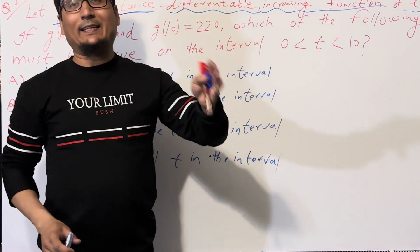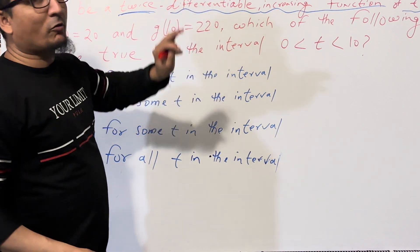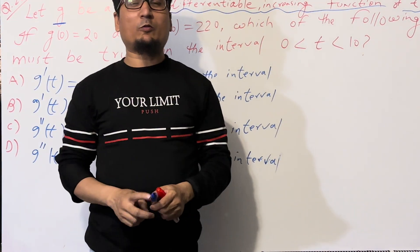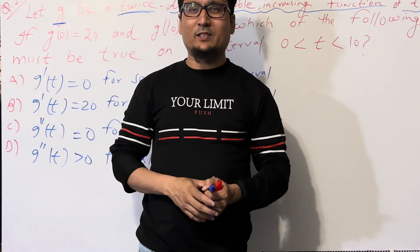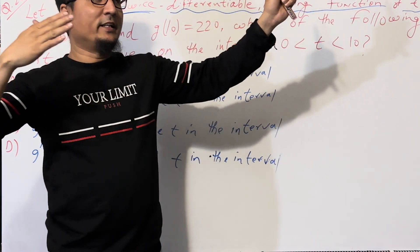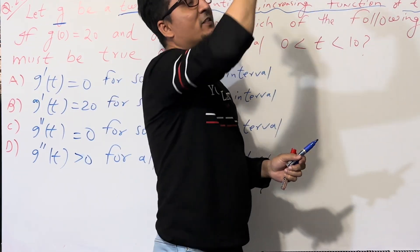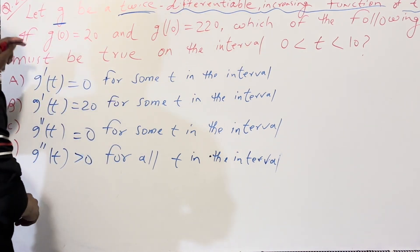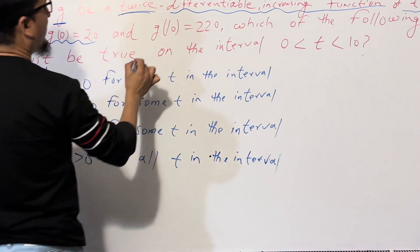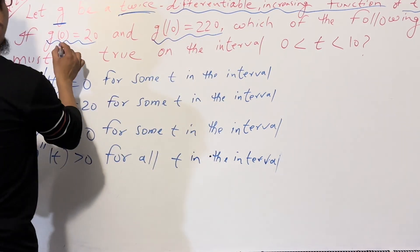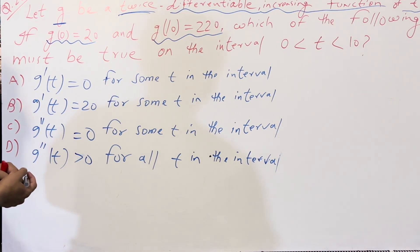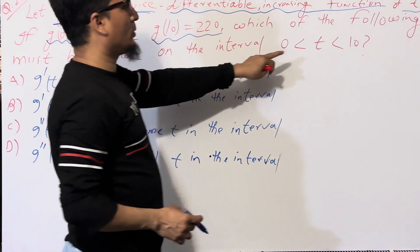So G is a function of T that is increasing and twice-differentiable. Think of a linear function - a linear function is always continuously increasing. The conditions given are: G(0) is equal to 20 and G(10) is equal to 220, meaning our x and y values are given.